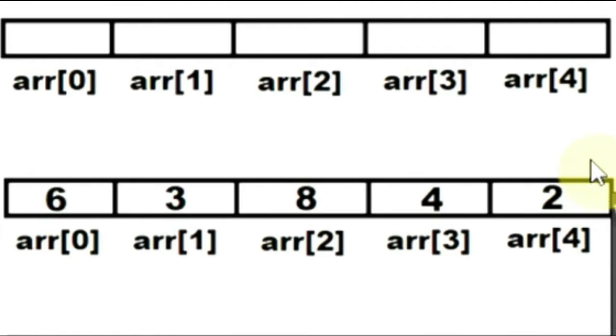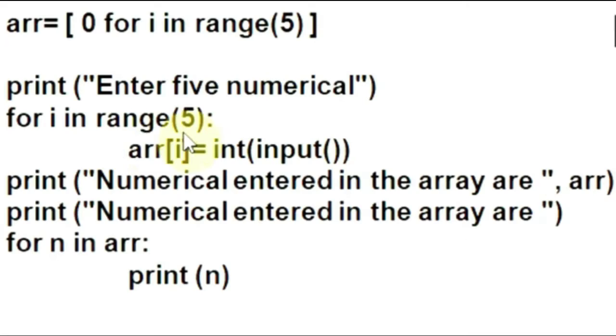Then after the value of i will become 4. Suppose the user enters value 2. That will be assigned to arr[4] index location. Then after the value of i will become 5, which is not allowed, the for loop will terminate and control will come over here.